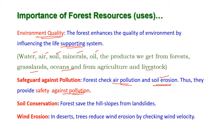Soil conservation: forests save hill slopes from landslides. If the forest cover is removed from areas like hill slopes, there are many chances of occurrence of landslides. Wind erosion: especially in places like deserts, trees reduce wind erosion by checking the wind velocity.